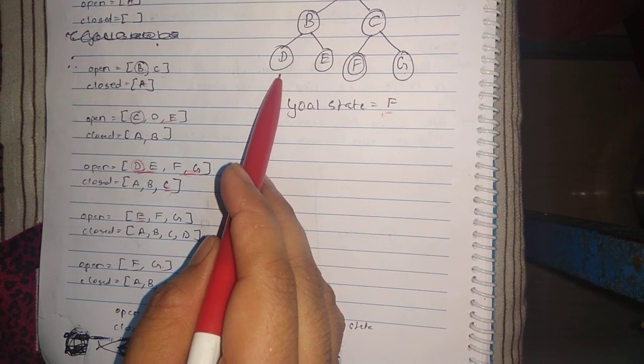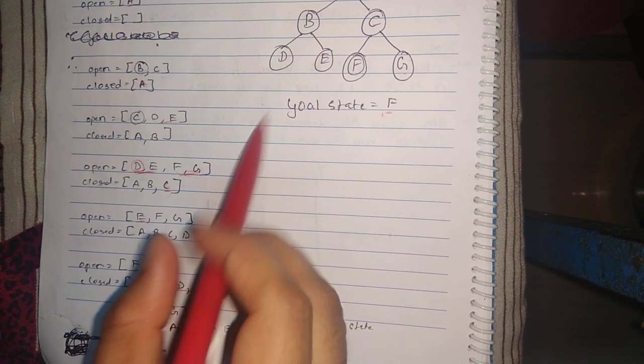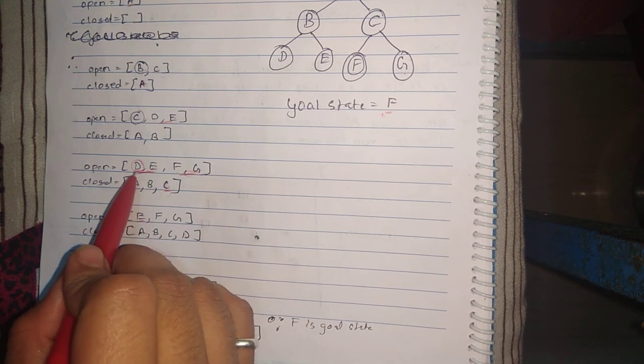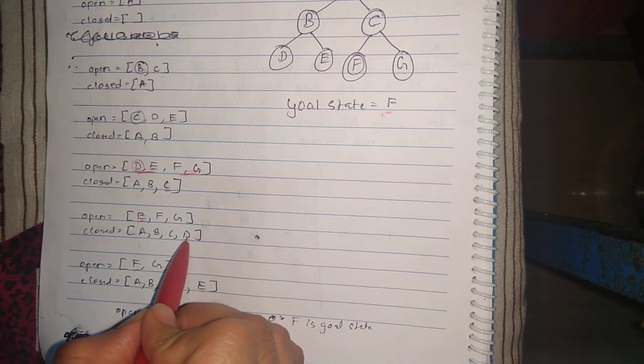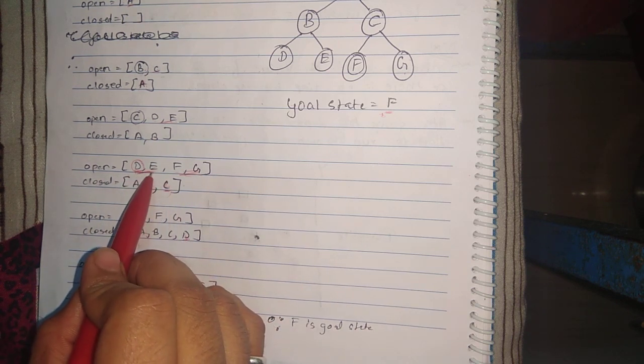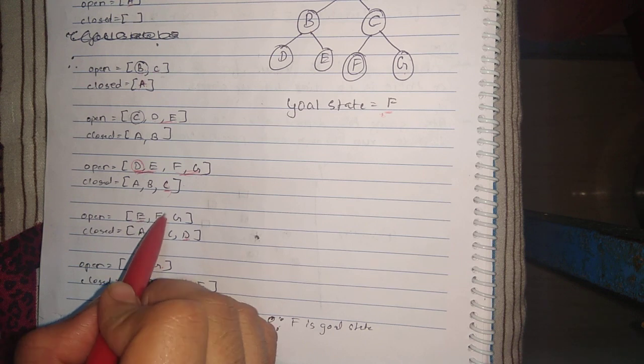D doesn't have any successors over here, it has no children. So we'll take D and place it in the closed array.